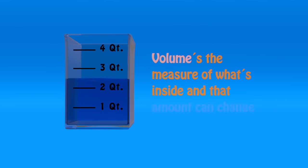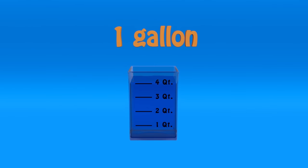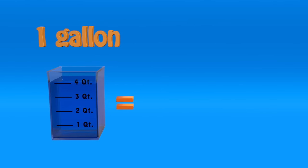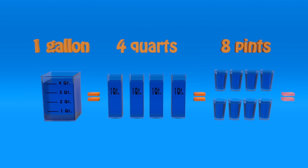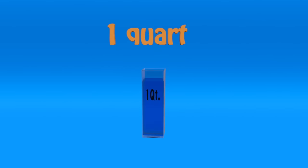One gallon is four quarts or eight pints or sixteen cups. One quart is two pints or four cups or thirty-two fluid ounces.